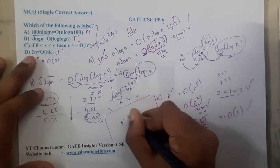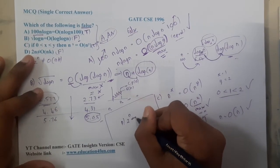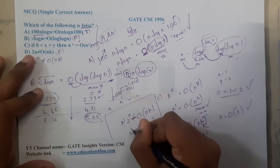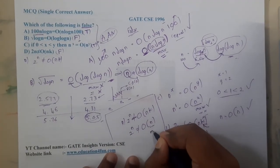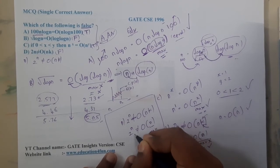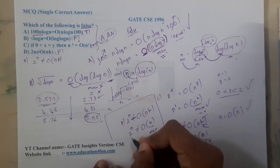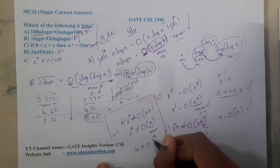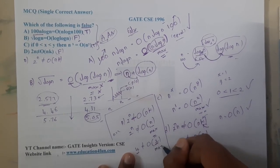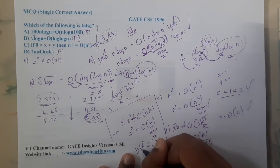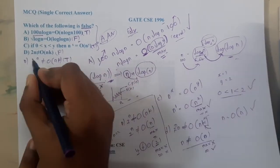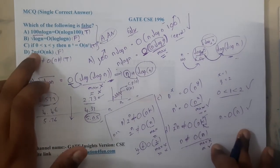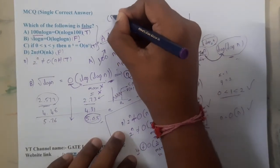So 2^n is not equal to O(n^k), confirming option D is true as stated. Please update your notes if you have a printing mistake showing '2n' instead of '2^n'. Finally, option B is the false statement and hence the correct answer to this question.